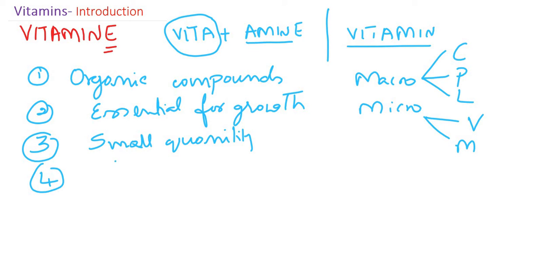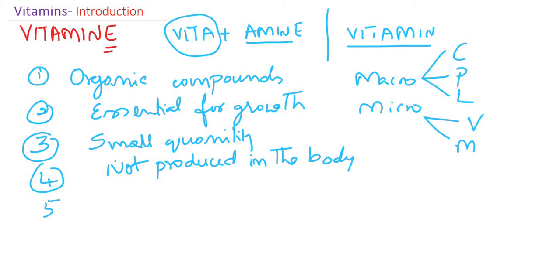Generally, vitamins are not produced in the body. Having said that, some vitamins are synthesized in our body — like biotin, niacin, vitamin K, and even vitamin D when you are exposed to sunlight. But these are not produced in sufficient amounts, so they must be supplied through our diet. To summarize: vitamins are organic compounds essential for various biochemical functions, required in small amounts, and generally not produced by the body — they are supplied through our diet.